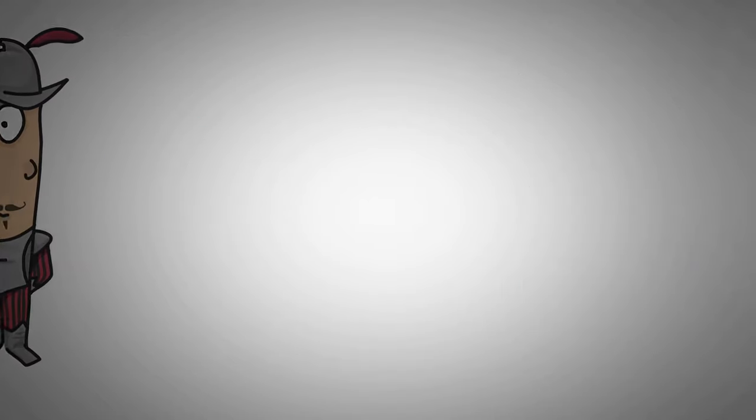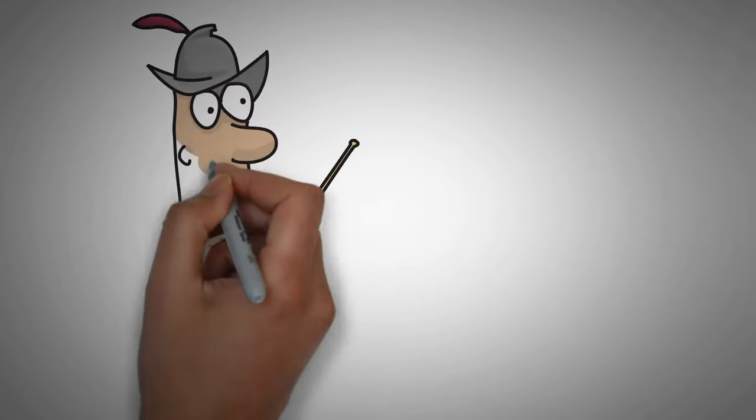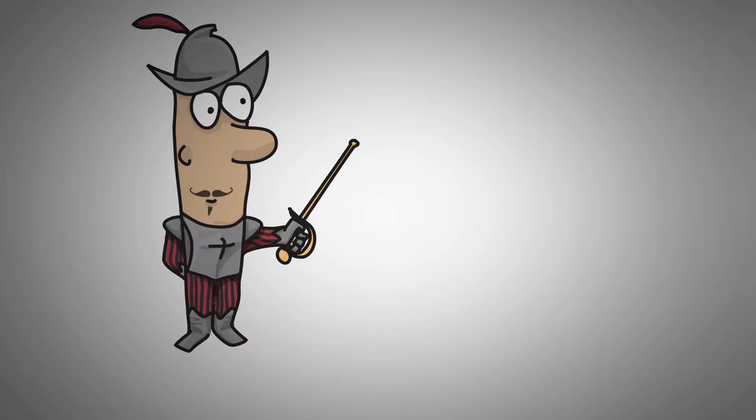Yet a short time later, Hamlet discovers someone spying on him from behind a curtain. He runs the man through with his sword, thinking it's Claudius, but it is Polonius.